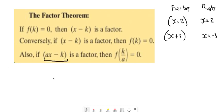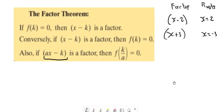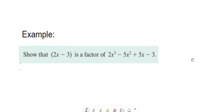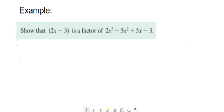Also, if ax minus k is a factor, well then k over a — that would be a root or a solution. So that comes into this first example. If two x minus three is a factor, then let two x minus three equal zero, bring over the three: two x equals three, and x equals three over two. So three over two is the root — that's something you can sub in and it should be equal to zero.